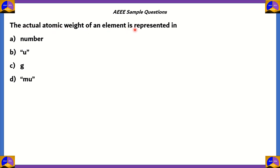The actual atomic weight of an element is represented in number U, GMU. We have four options, and option D is incorrect because MU itself is not a unit of mass. We have then option C, gram, and gram is usually used for molar mass. The mass of one mole of a particular element will be weighed in grams, but here we're asking for the actual atomic weight, so option C is incorrect.